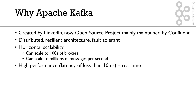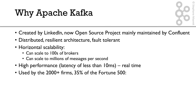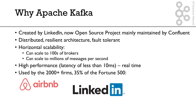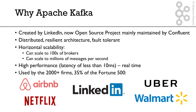It is extremely high performance. The latency to exchange data from one system to another is usually less than 10 milliseconds if you have good machines, and this is what we call real time — real time means that the latency is really, really low. You can believe 2000 plus firms, 35% of the Fortune 500 that use Kafka, such as LinkedIn, Airbnb, Netflix, Uber, Walmart, and so many others.